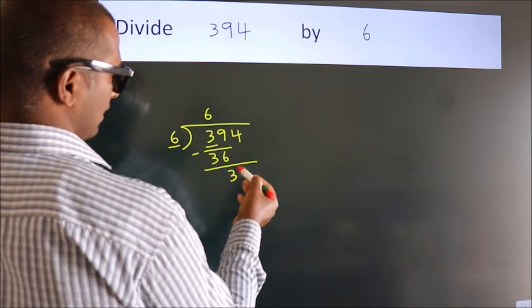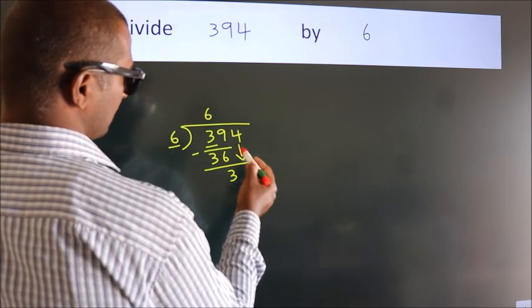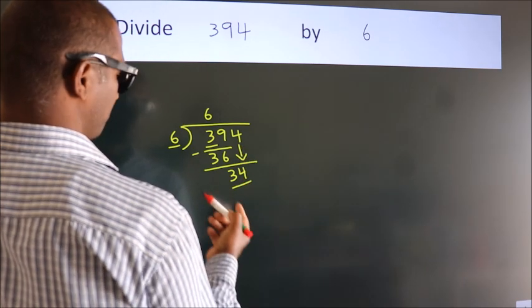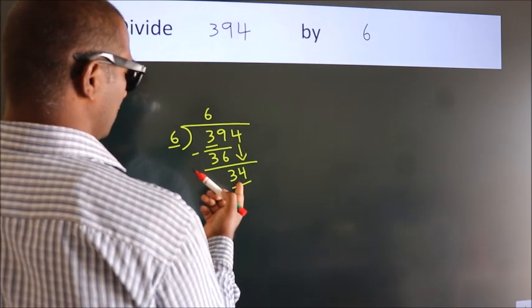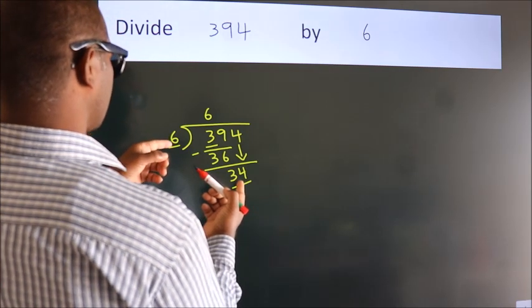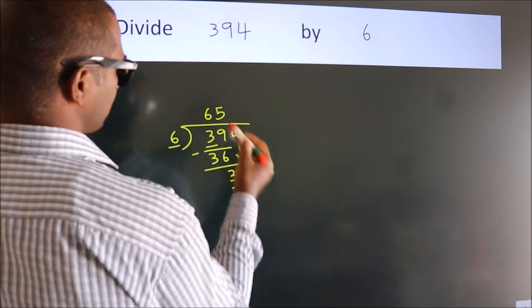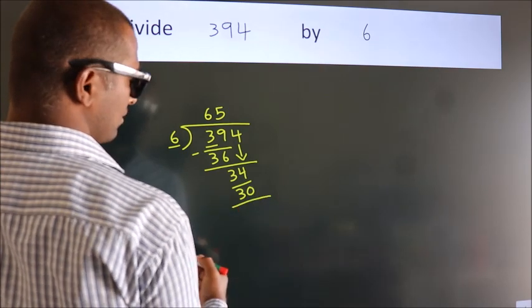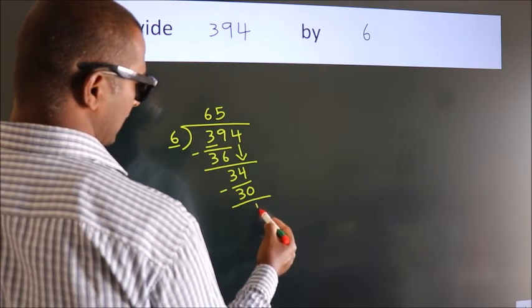After this, bring down the next number, so 4 down, so 34. A number close to 34 in the sixth table is 6×5=30. Now we subtract, we get 4.